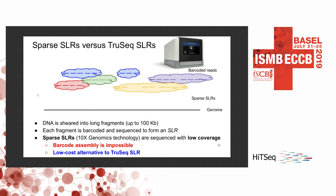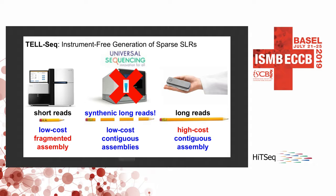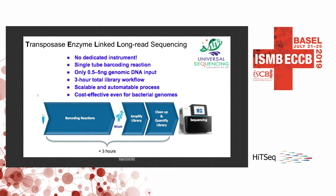Our CloudSpades algorithm is focused mostly on low-cost sparse SLR data. The most popular technology for generating synthetic long reads is the 10x Genomics Chromium controller, which allows a lower cost of sequencing per base than long read sequencing. However, the 10x Genomics instrument is quite expensive, making it impractical in the short run to generate sparse SLRs for small genomes and metagenomes. To address that problem, several groups are developing instrument-free methods of SSLR generation. For example, Universal Sequencing Technology recently developed a TelSeq protocol, providing a more cost-effective and faster way to generate SSLR for small genomes without requiring a dedicated instrument.